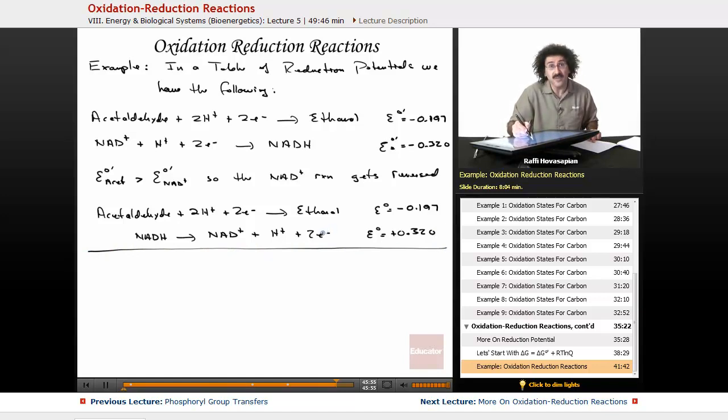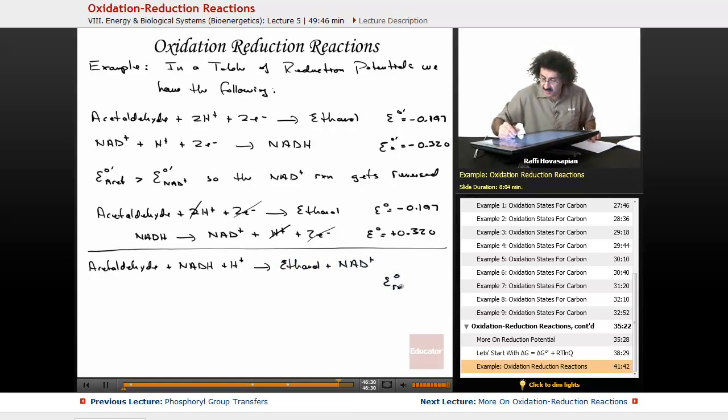We go ahead and we cancel electrons. In this case, there's two here and two here. We don't have to multiply by anything to balance it. We cancel this H plus with one of those H pluses, and what we're left with is the net reaction. Acetaldehyde reacts with NADH under some slightly acidic conditions, and it turns into ethanol and releases NAD plus. The net for this, just add this and this, and what you end up with is positive 0.123.